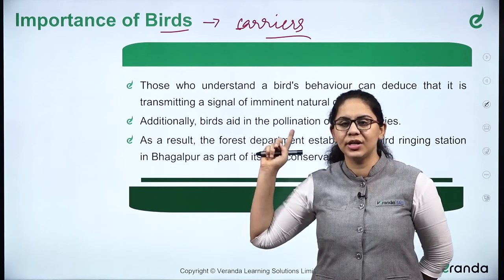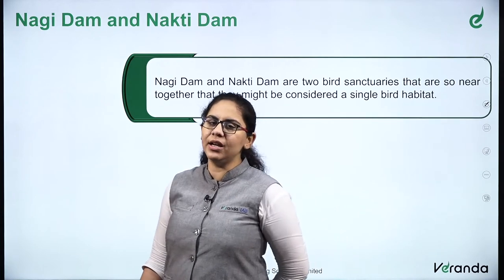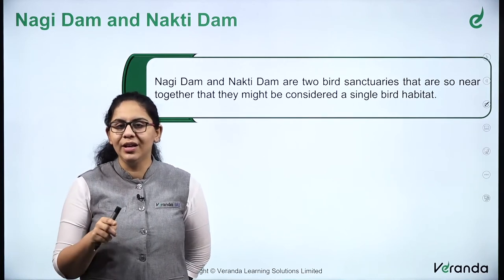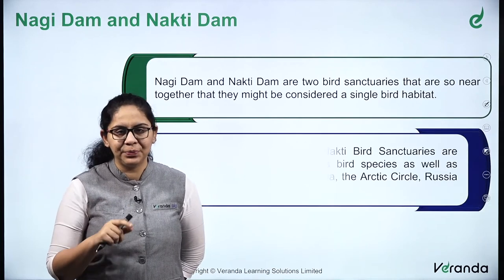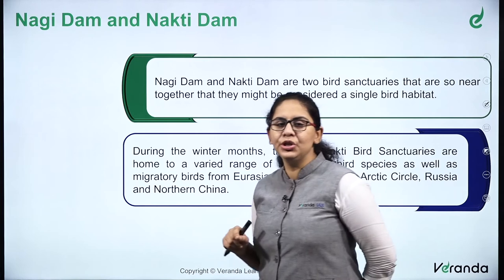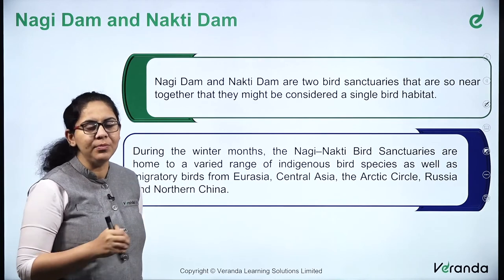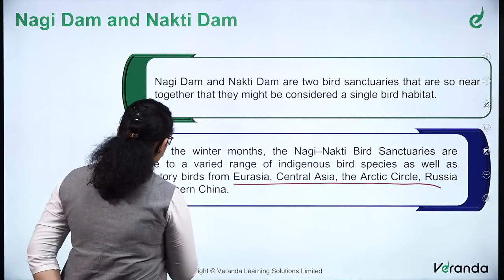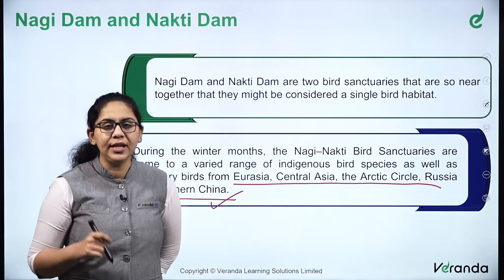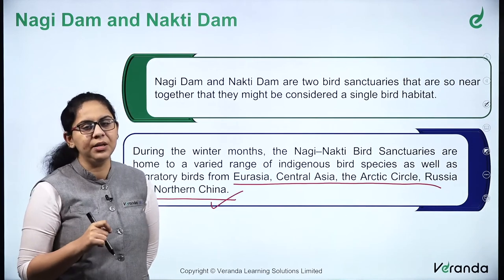We also have international bodies and international organizations working for the conservation of birds. Nagi Dam and Nakti Dam are two bird sanctuaries so near together that they may be considered a single bird habitat. During the winter months, the Nagi Nakti Bird Sanctuaries are home to a varied range of indigenous bird species as well as migratory birds from Eurasia, Central Asia, the Arctic Circle, Russia, and Northern China.